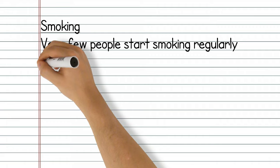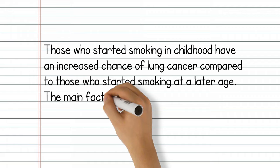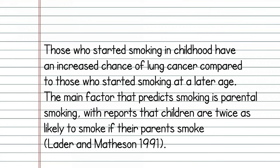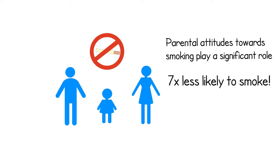Smoking. Very few people start smoking regularly after the age of 19 or 20, and many children try their first cigarette whilst at primary school. Those who started smoking in childhood have an increased chance of lung cancer compared to those who started smoking at a later age. The main factor that predicts smoking is parental smoking, with reports that children are twice as likely to smoke if their parents smoke. In addition, parents' attitudes towards smoking also influence their offspring's behaviour. For example, if a child perceives the parents as being strongly against smoking, he or she is up to seven times less likely to be a smoker.